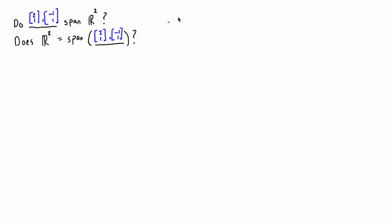What it's asking is: is there some expression where we have a scalar times the first vector [2, 1] plus another scalar times the second vector [-1, 1], and can that equal any imaginable vector — written as (a, b)? We're asking whether there's some combination of these that will satisfy any possible outcome in R2.